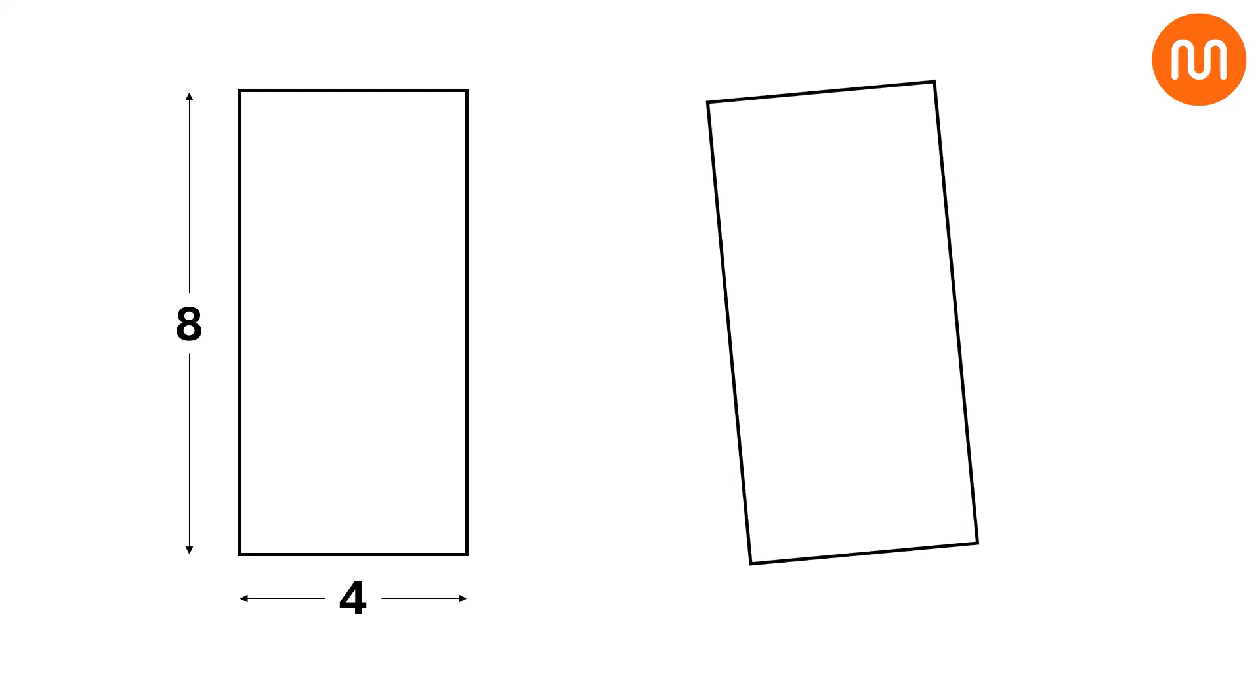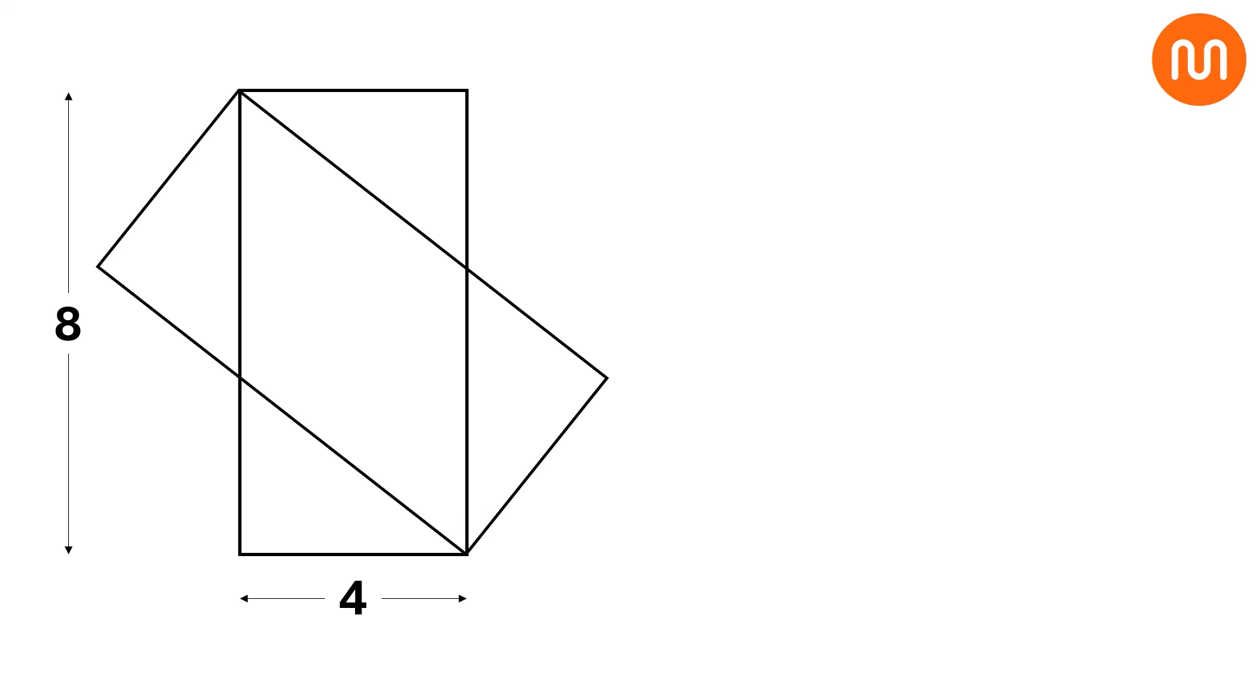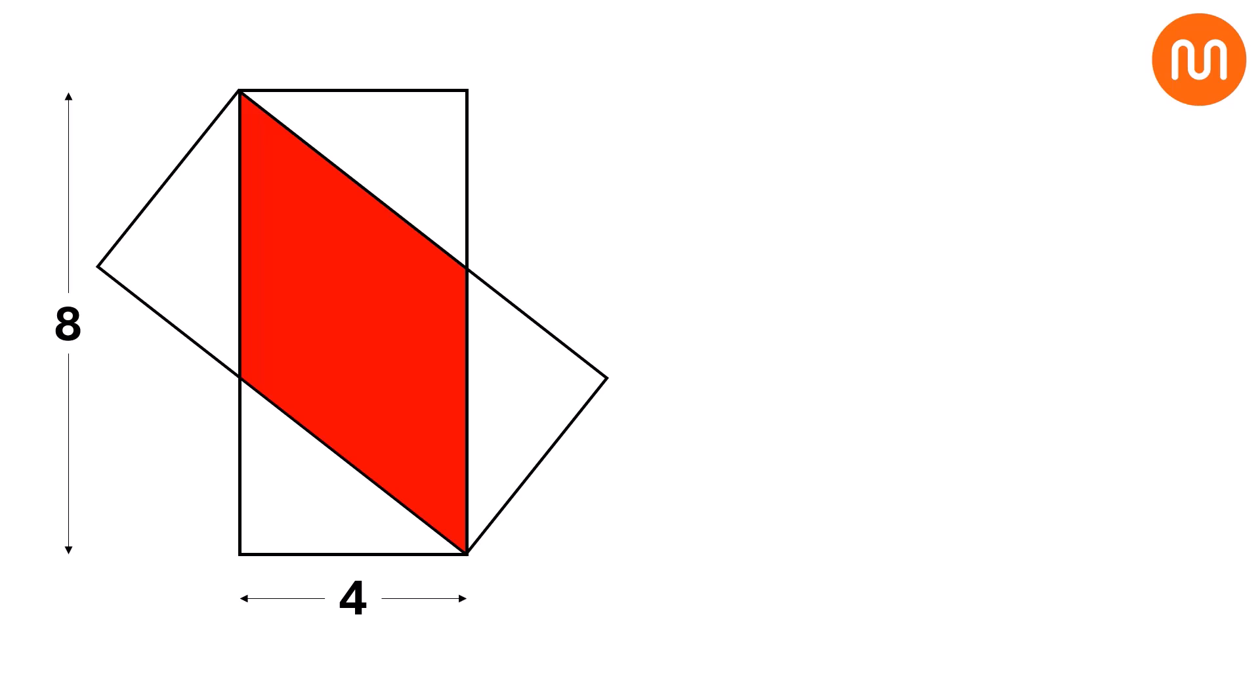Let's start with a rectangle that has a height of 8 and a base of 4. Now, duplicate this rectangle, rotate it, and slide it back so that their opposite corners overlap. The question is, can you determine the overlapping area of these two rectangles?